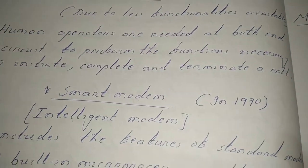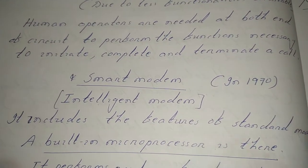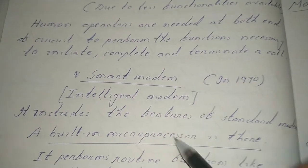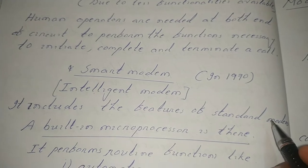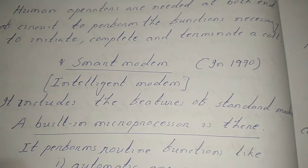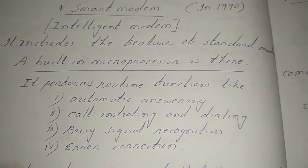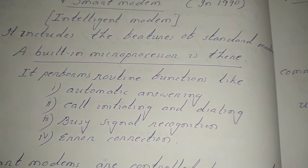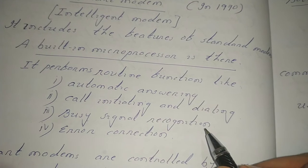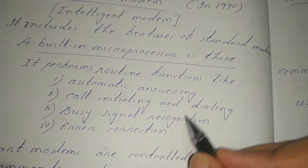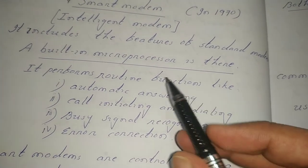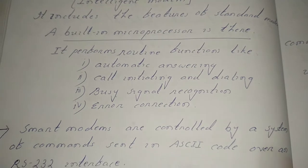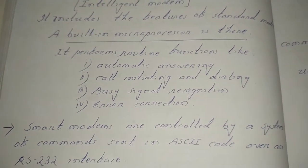In 1970, another standard modem was developed called the smart modem, sometimes also called an intelligent modem. Its main feature is a built-in microprocessor that performs routine functions such as automatic answering, call initiating and dialing, busy signal recognition, and error correction. These are the different routine functions performed by the built-in microprocessor present in the intelligent or smart modem.